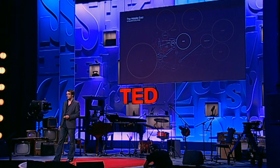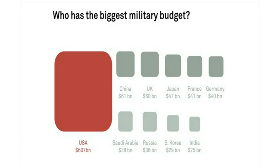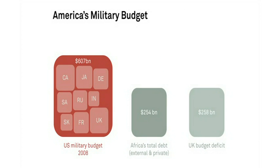So we can use this new kind of language to alter our perspective or change our views. Let me ask you a simple question: who has the biggest military budget? It's got to be America, right? Massive — 607 billion in 2008. So massive, in fact, that it can contain all the other military budgets in the world inside itself. You can see Africa's total debt there, and the UK budget deficit for reference. So that might well chime with your view that America is a sort of warmongering military machine out to overpower the world with its huge industrial and military complex.